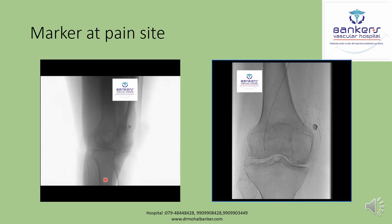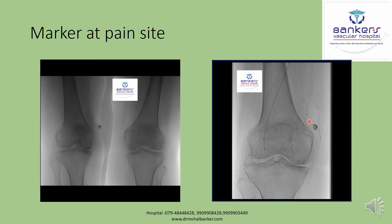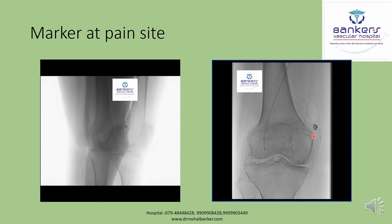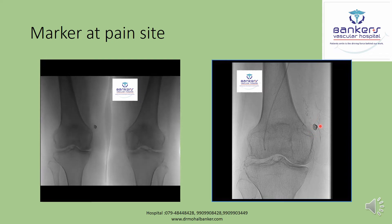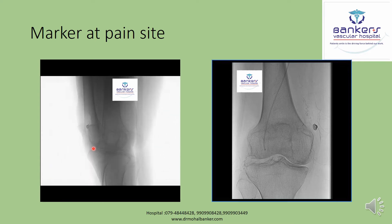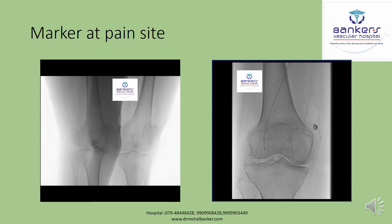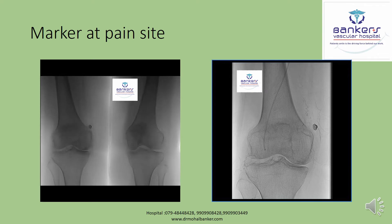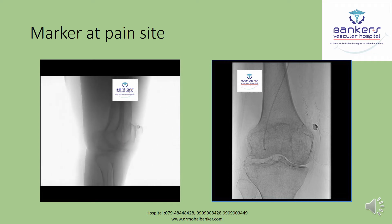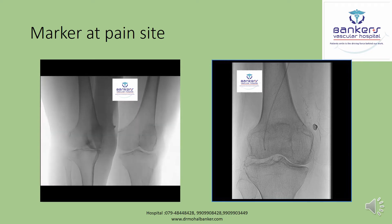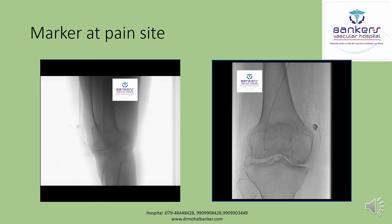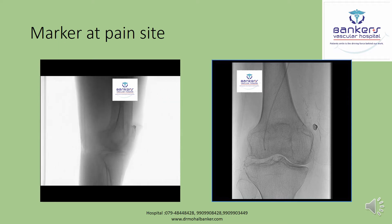In this first case, the patient has pain over a specific region, so we have placed a marker over that site. After placing the marker we perform a cone beam CT. When doing the angiography, we selectively cannulate the genicular artery and then perform a cone beam CT scan to determine whether blood supply from that genicular artery reaches the pain site or not.